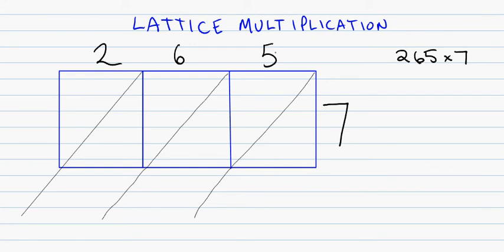The 7 is going to get multiplied by the 5 first. We'll write our 35 like this. 7 times 6 gets written in this box like that. 7 times 2, written like this, and now I'm going to add diagonally across the grid here.